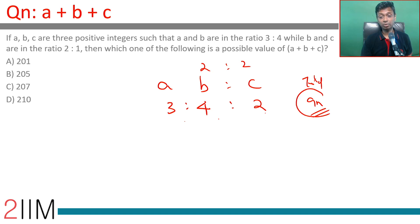a+b+c should be a multiple of 9. Looking at 207: 2+0+7 equals 9. The other three are not multiples of 9. We're looking for a multiple of 9.